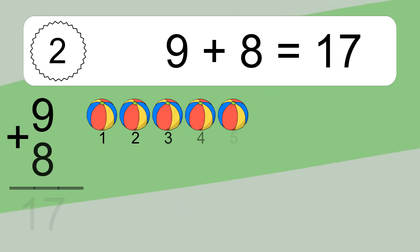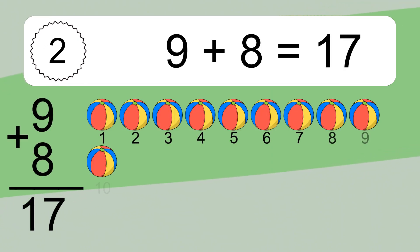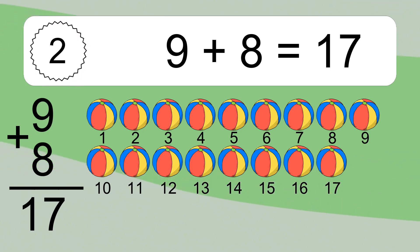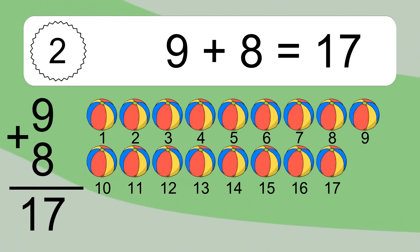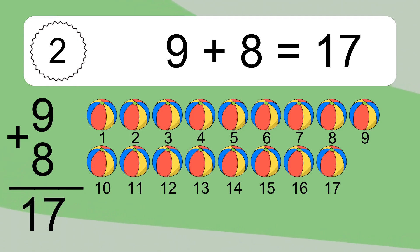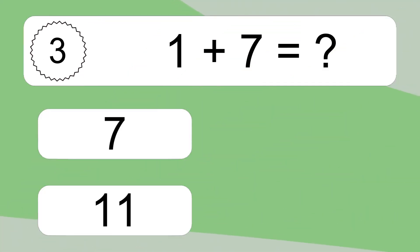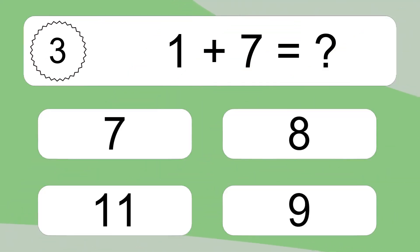9 plus 8 equals 17. Let's count it. 1, 2, 3, 4, 5, 6, 7, 8, 9, 10, 11, 12, 13, 14, 15, 16, 17. 1 plus 7 equals what?